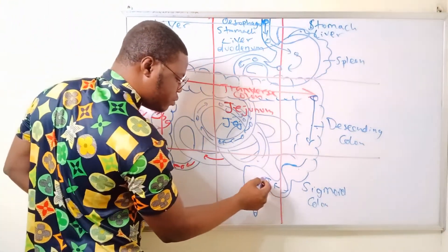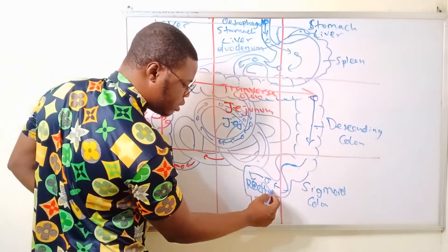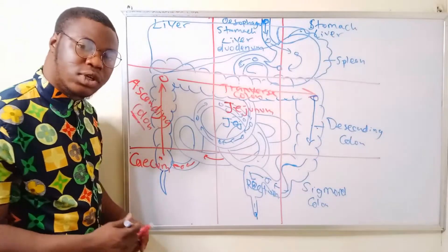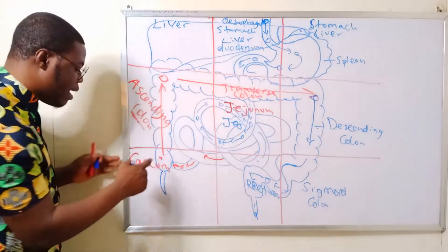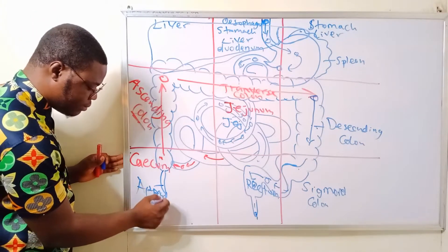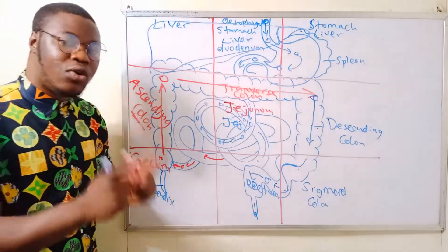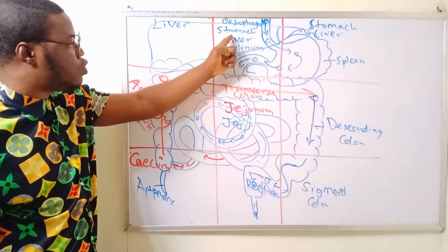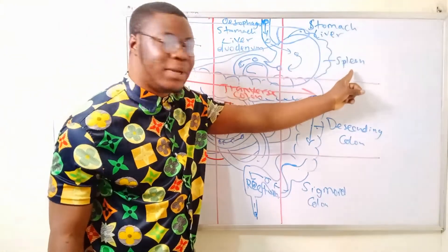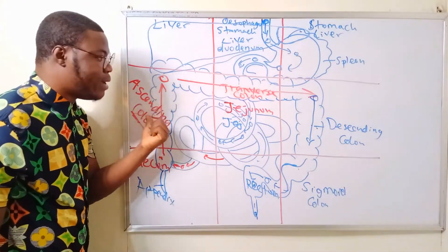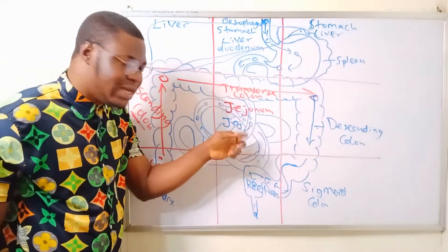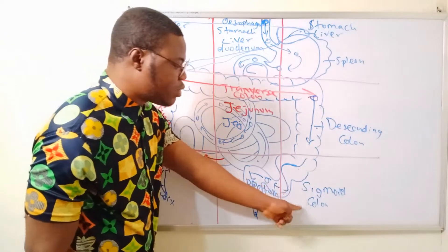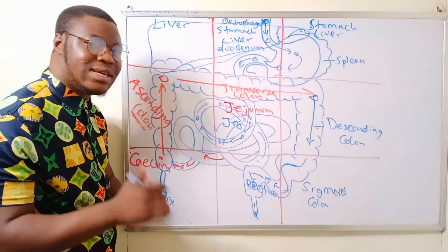Don't forget the appendix, which is found attached near the cecum. To summarize organs by region: right hypochondriac — liver; epigastric — esophagus, stomach, liver, duodenum; left hypochondriac — stomach, liver, spleen; right lumbar — ascending colon; umbilical — transverse colon and jejunum; left lumbar — descending colon; right iliac — appendix and cecum; hypogastric/pelvic — rectum; left iliac — sigmoid colon.